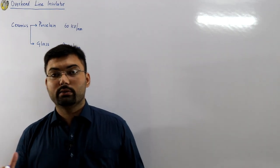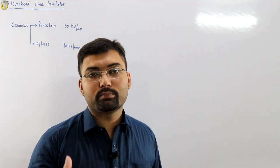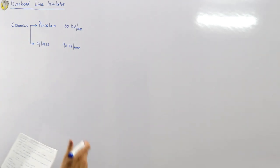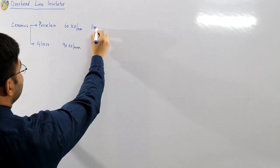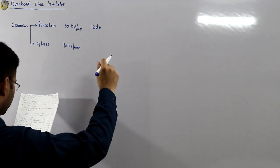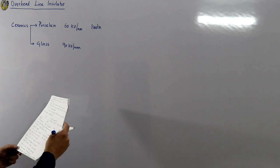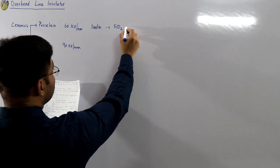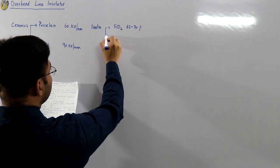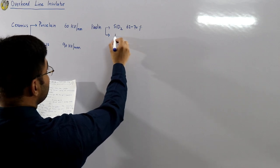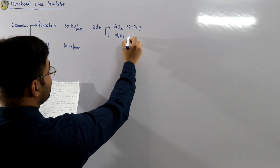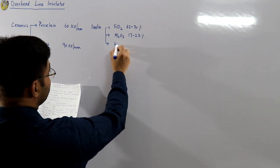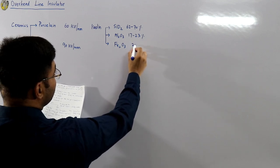The detailed composition of kaolin is: SiO2 (silicon oxide) at 62–70%, Al2O3 (alumina) at 17–23%, Fe2O3 (iron oxide) at 2.5–5.3%, and CaO (calcium oxide, basically limestone) at 2–3%.